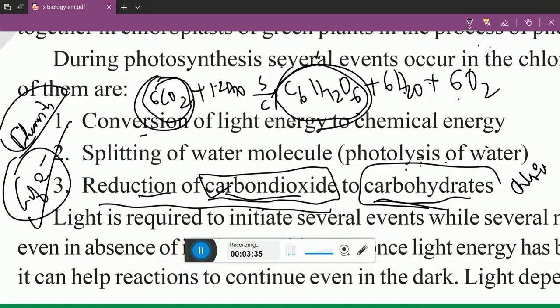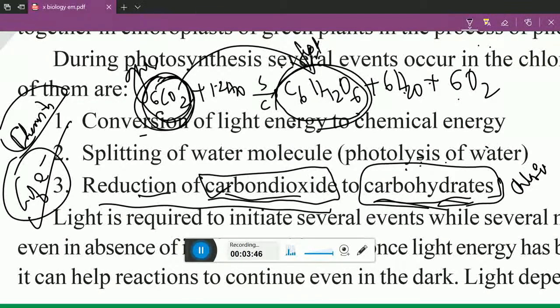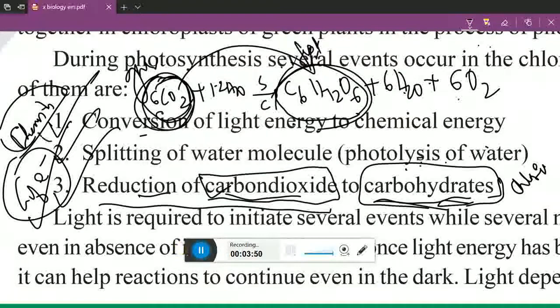So understood, carbon dioxide is converting into carbohydrate. Gas is converting into food materials. This is very specific equation and reaction in case of green plants which occur in photosynthesis.